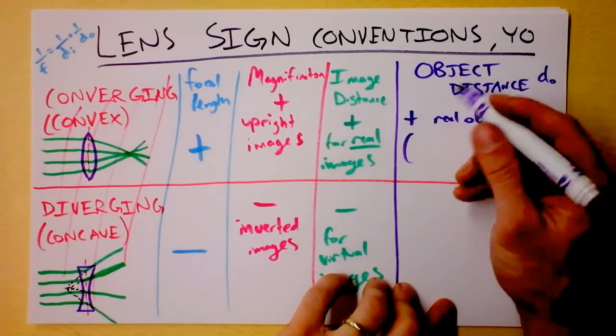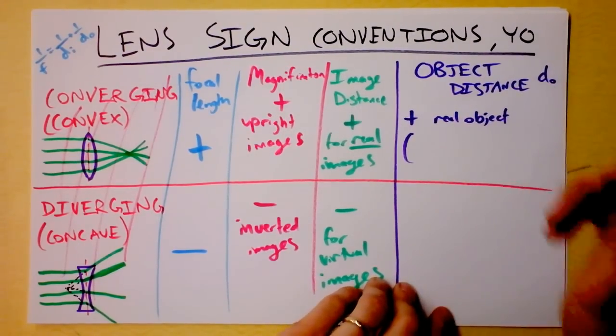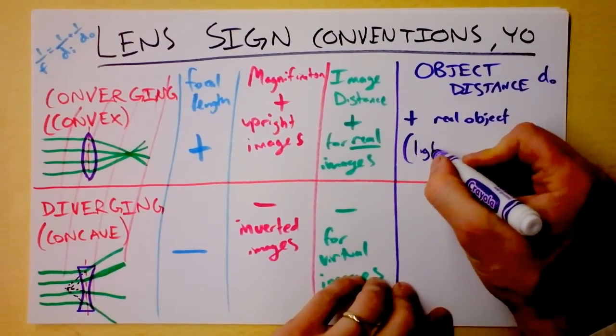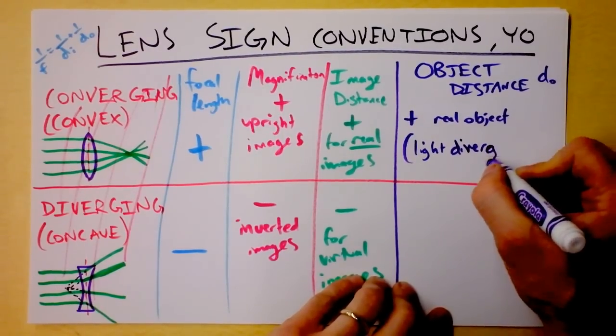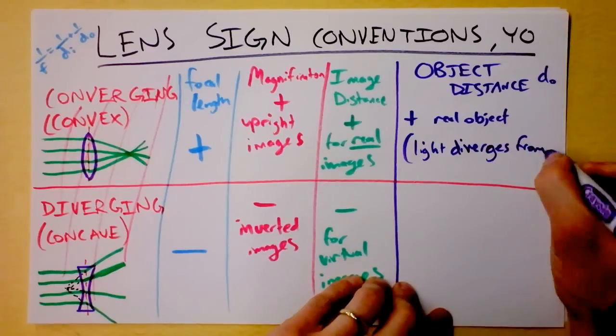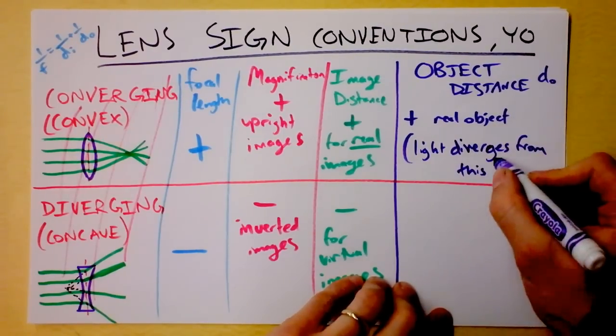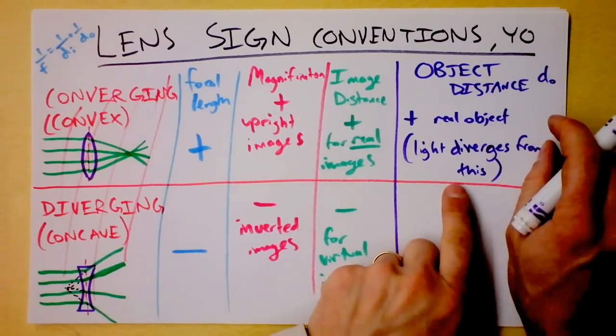But a real object is something that actually has light diverging from it. Light diverges from this. That's the object distance for a real object.